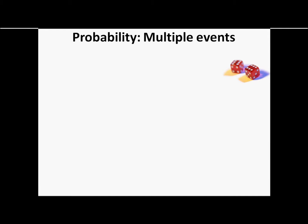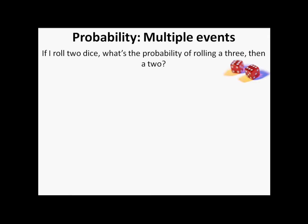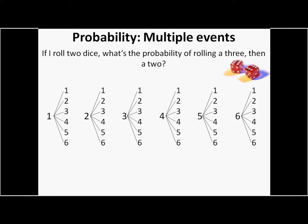Okay, so now we're going to talk about probability with multiple events. So if I roll two dice, what's the probability of rolling a three, then a two? Well, here is our combination chart from earlier, listing all of the different outcomes that could occur, all 36 outcomes. The only time it shows rolling a three, then a two, is right here. So there's only one time that's going to happen. So that's one out of 36. You have a one in 36 chance of doing that.